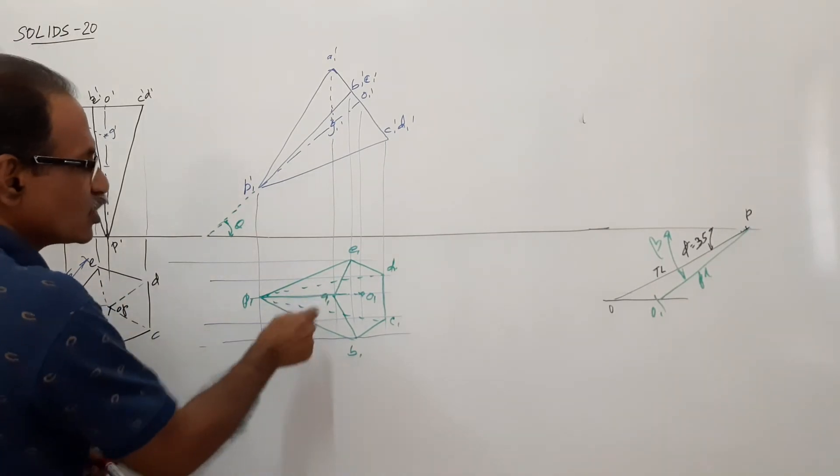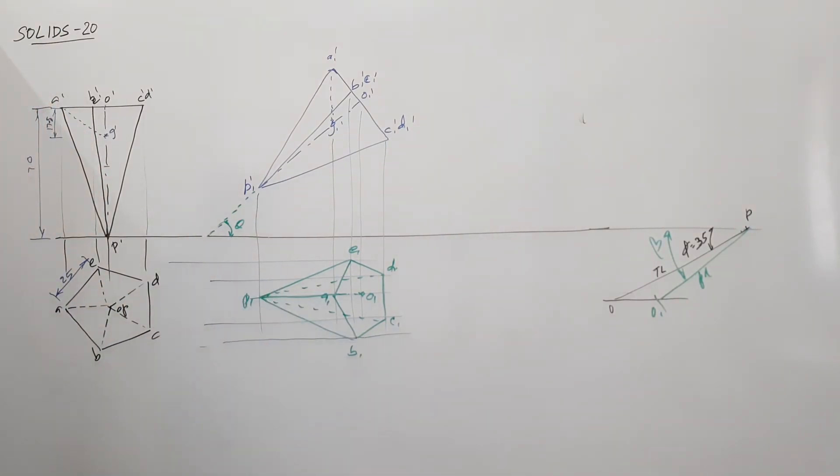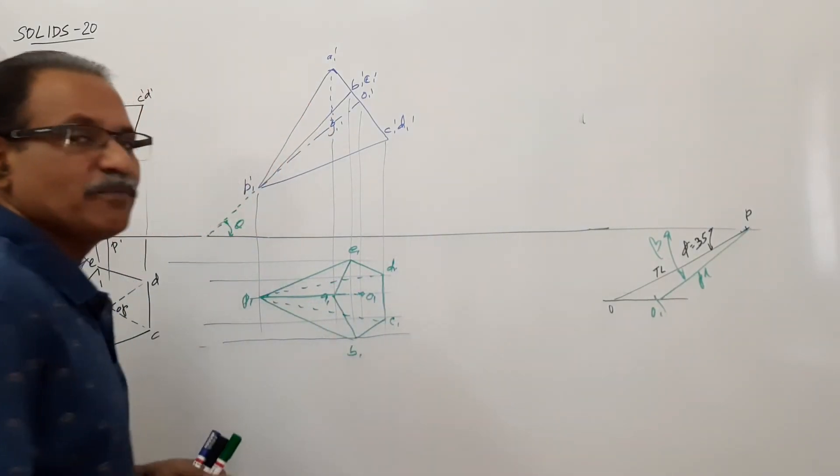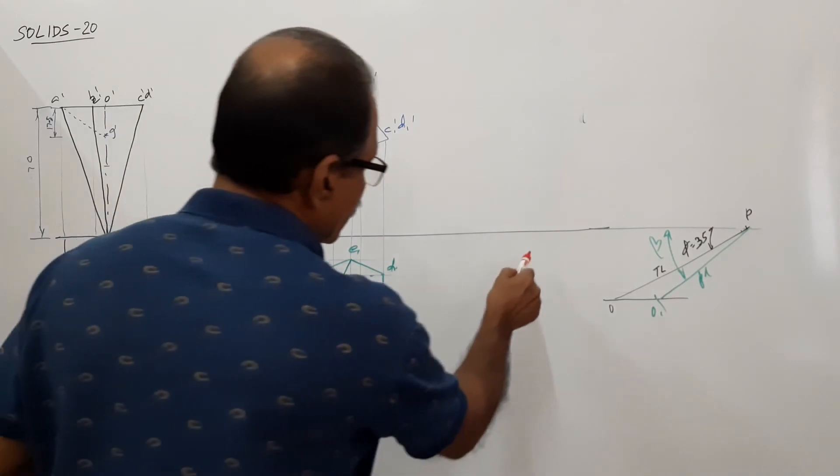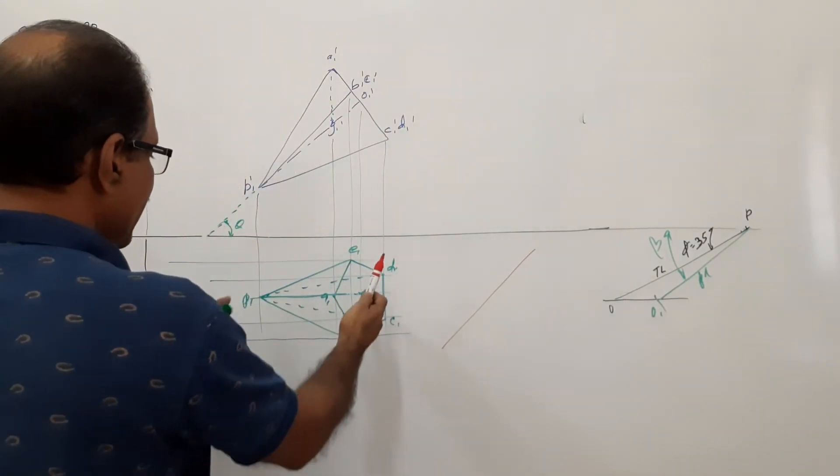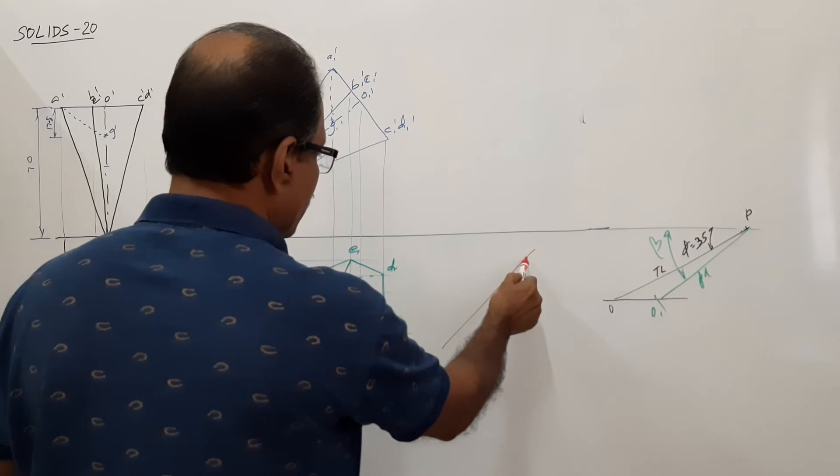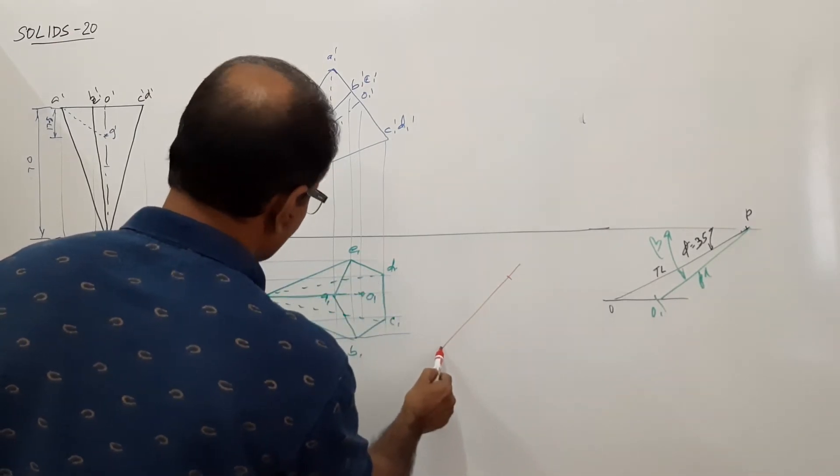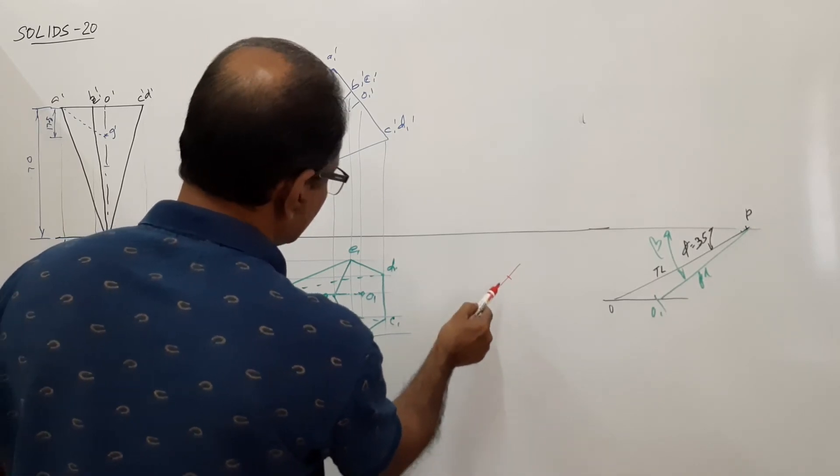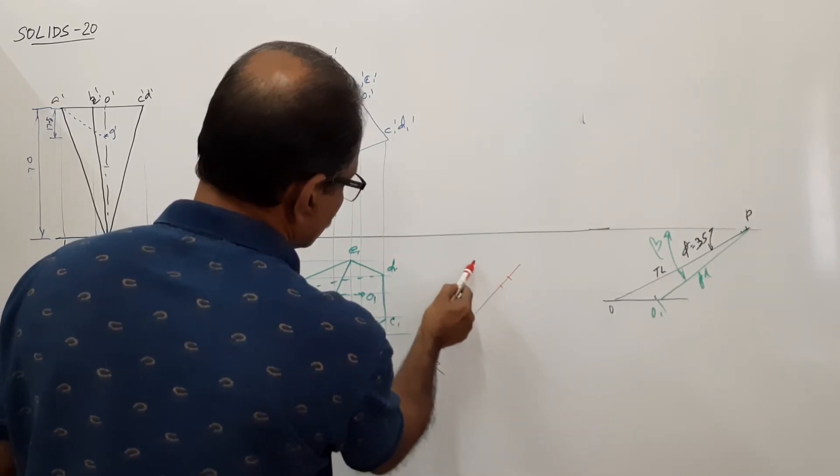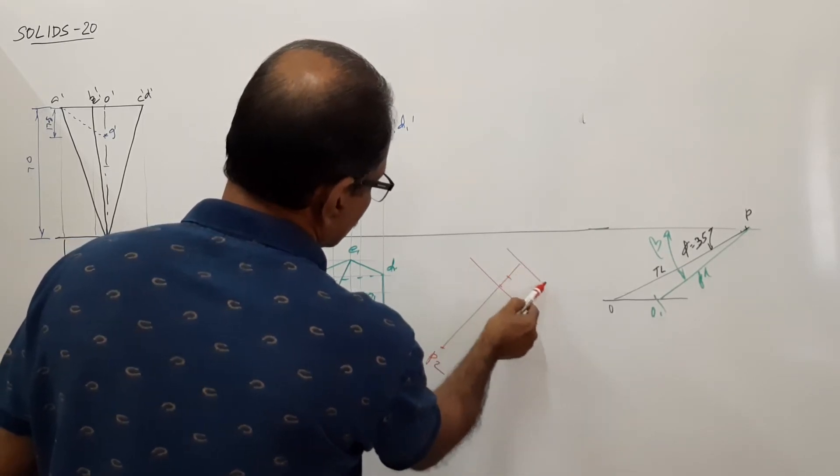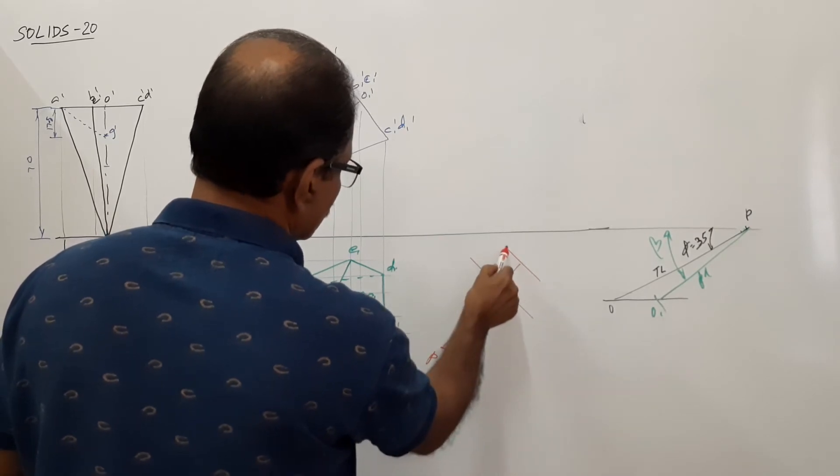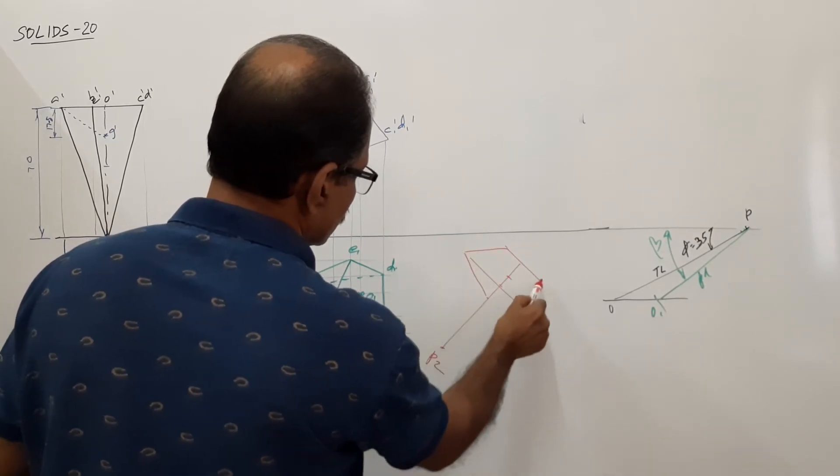Now, then what? Redraw this plan. Redraw this plan such a way that, in such a way that O1 P1 becomes O2 P2 here, making beta. Take this O1 P1 and mark P1, P2, P1 to P2.